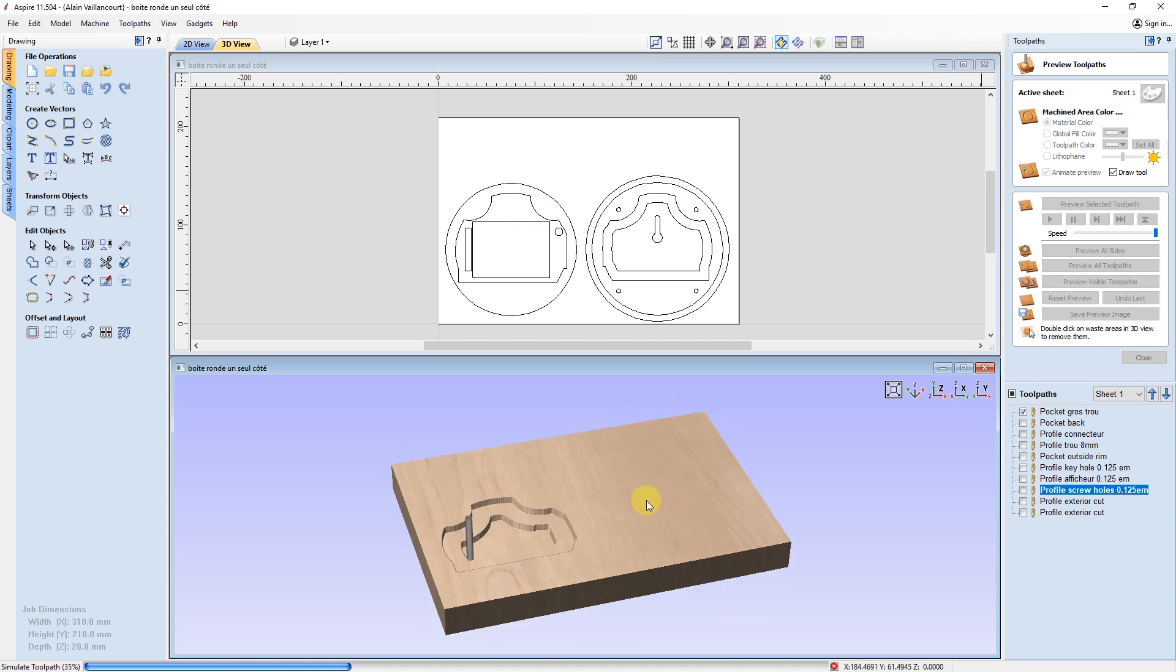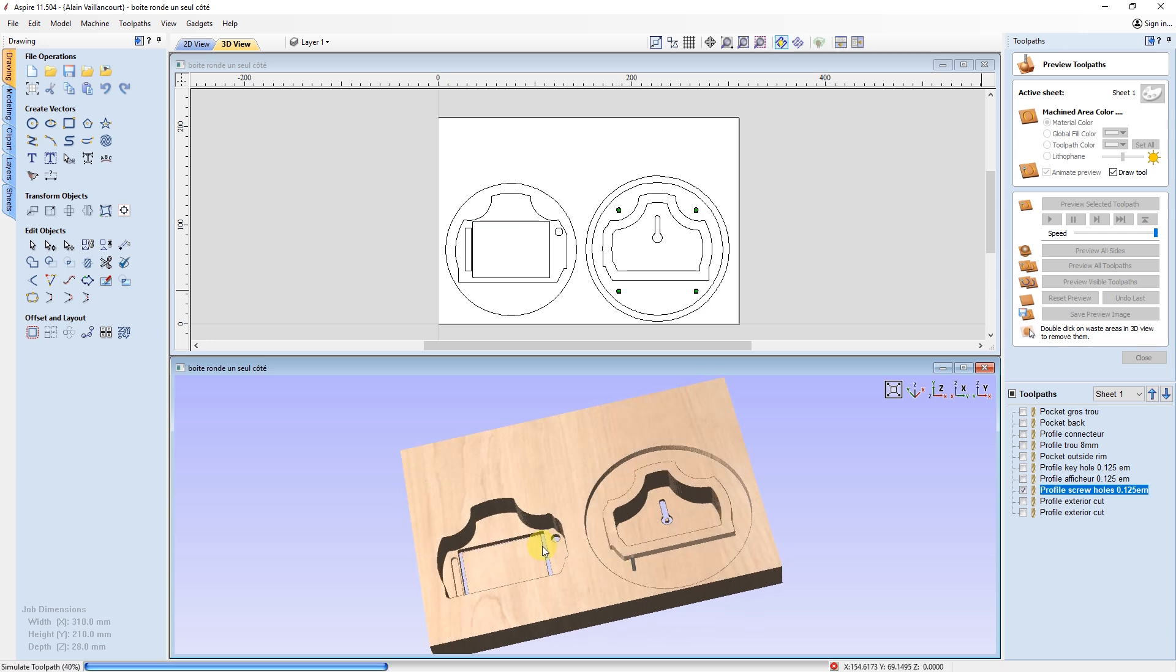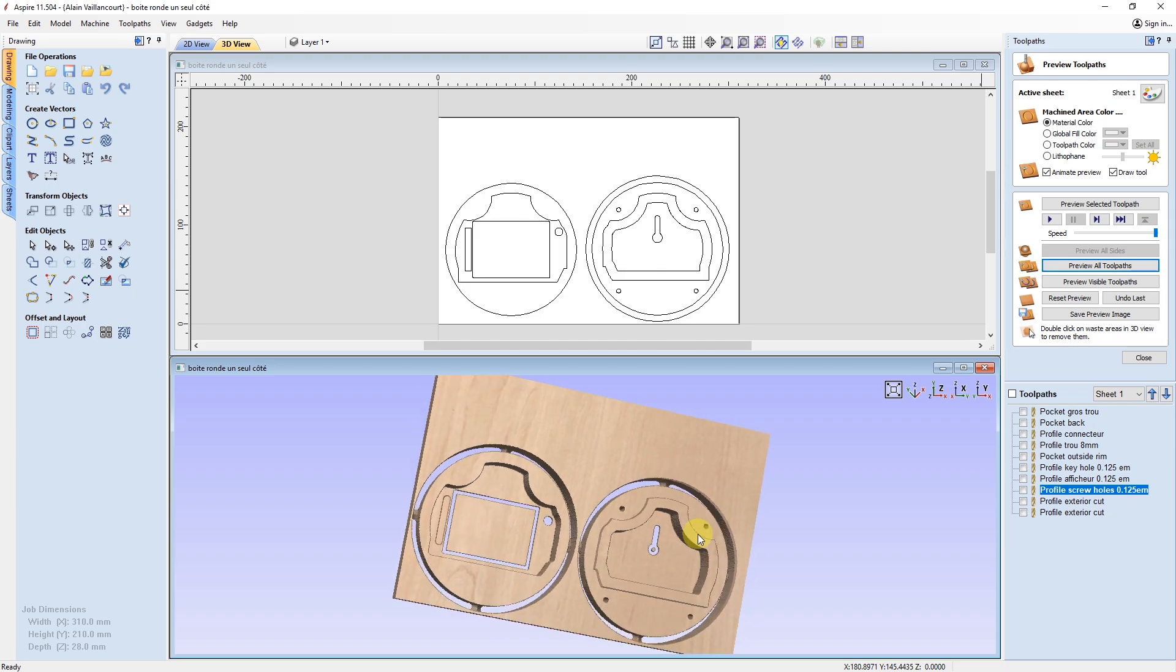After planing a piece of maple, I designed a round box in Aspire. I don't know why, I like round boxes. I just do. Then it's possible to cut the maple.